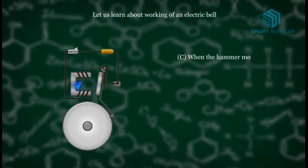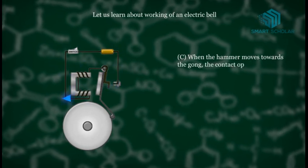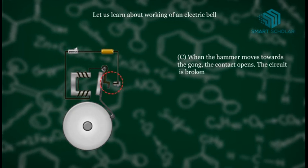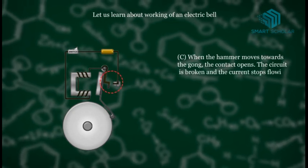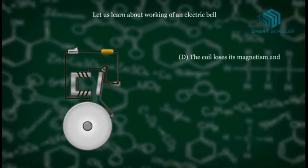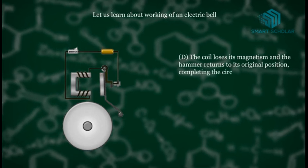When the hammer moves towards the gong, the contact opens. The circuit is broken and the current stops flowing. The coil loses its magnetism and the hammer returns to its original position, completing the circuit again.